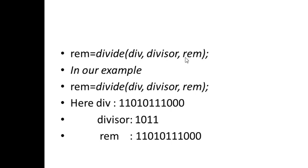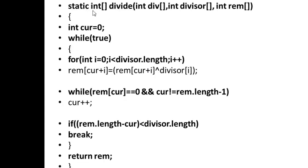The divide function takes the divisor, dividend, and remainder as parameters. Inside, a while(true) loop performs the XOR operation. The remainder is XORed with the divisor polynomial and the result is stored back into the remainder. This is the core of the CRC division process.